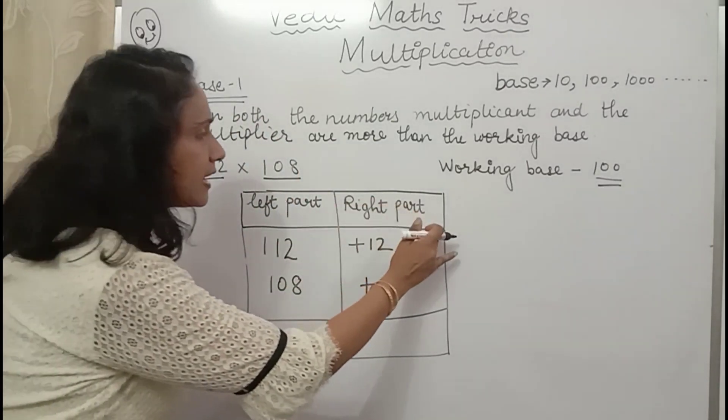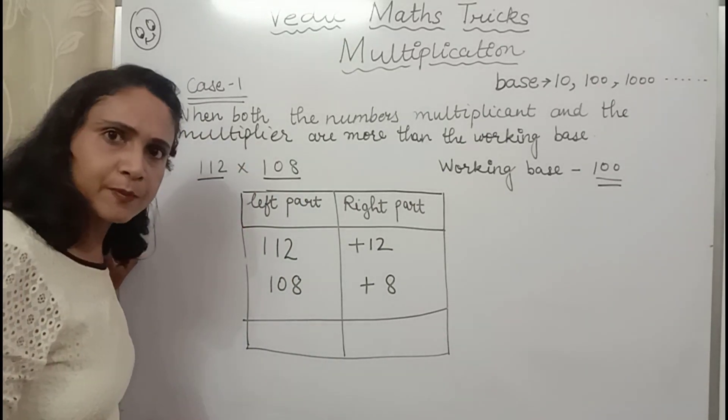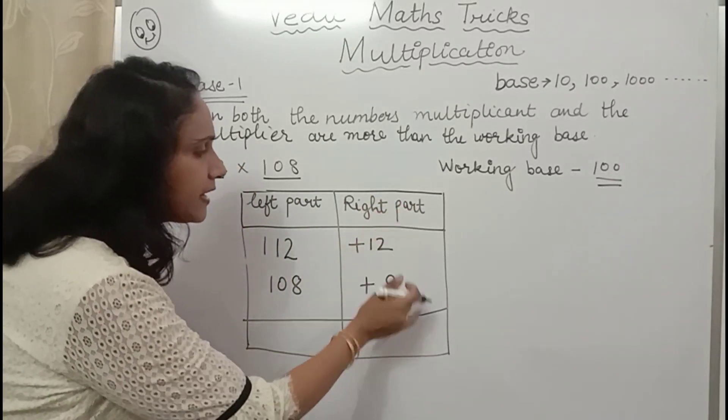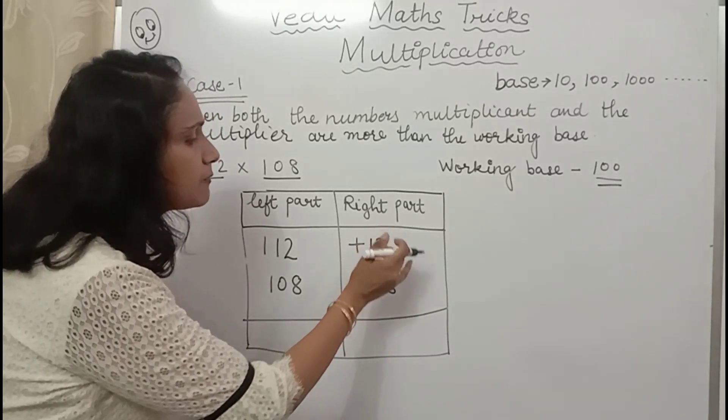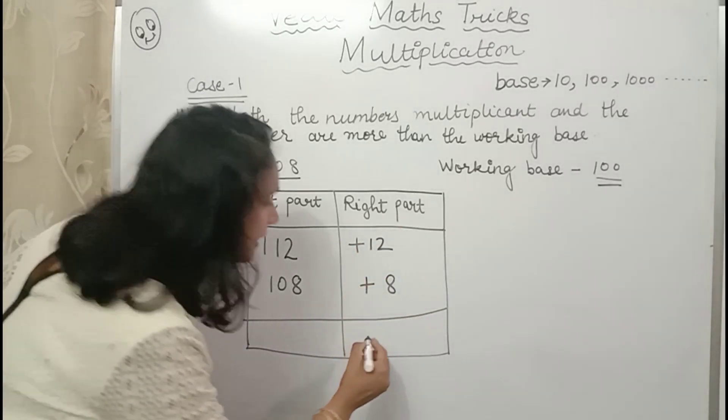Now there are two parts here. One is right part and other is left part. Right part, we have surplus here. So we will multiply these two surplus. 12 multiplied by 8. 12 by 8 are 96.